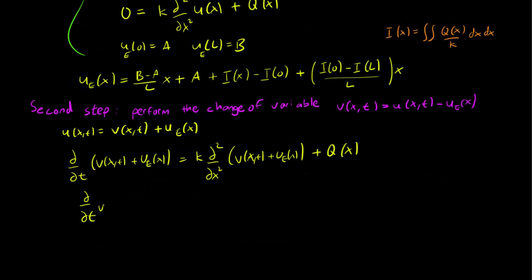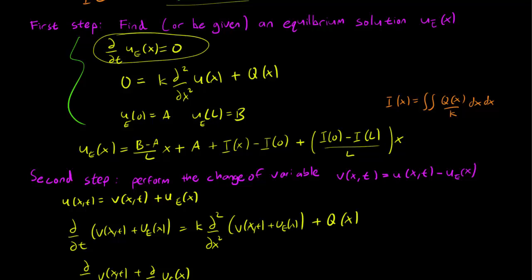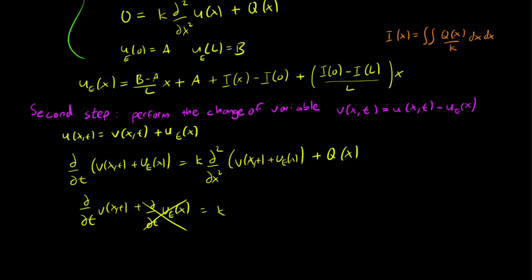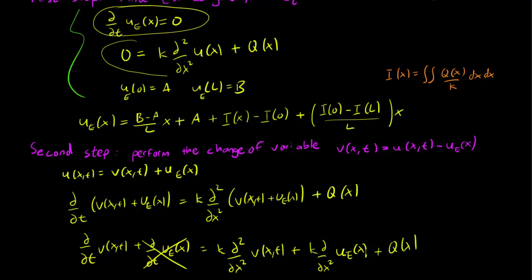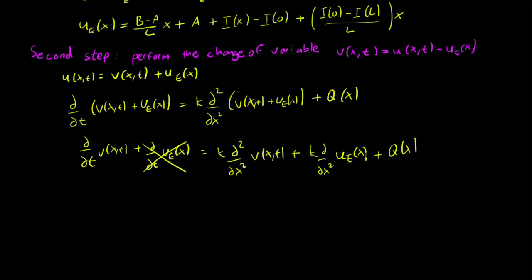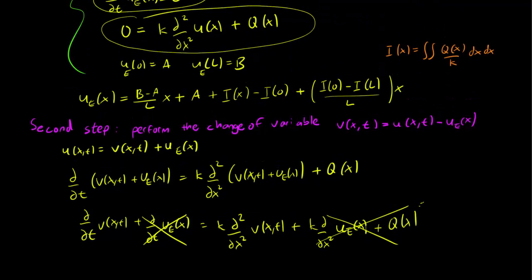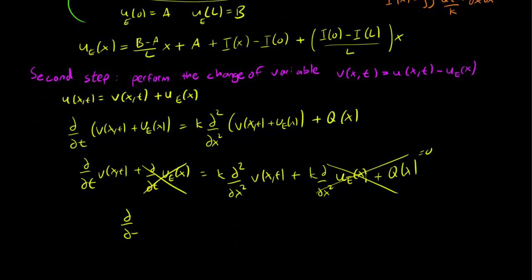Applying the distributive property of derivatives, we have ∂v/∂t plus ∂u_e/∂t. But the equilibrium solution by definition doesn't depend on time, so that term goes to zero. We also get k ∂²v/∂x² plus k ∂²u_e/∂x² plus Q(x). But the equilibrium solution solves the heat equation, so k ∂²u_e/∂x² + Q(x) = 0 as well. What we're left with is just the regular heat equation without any non-homogeneous parts.